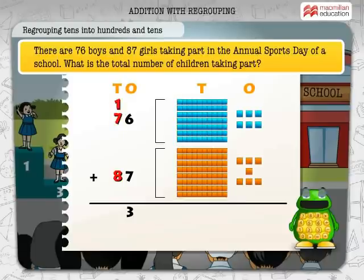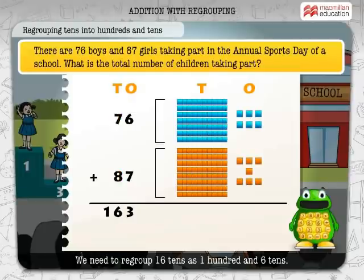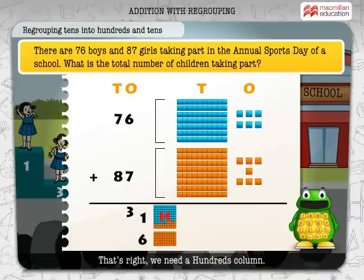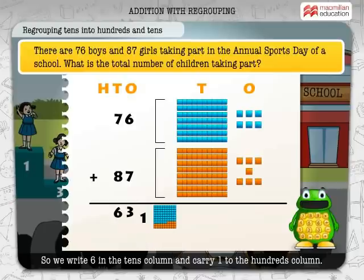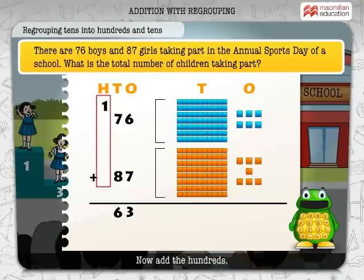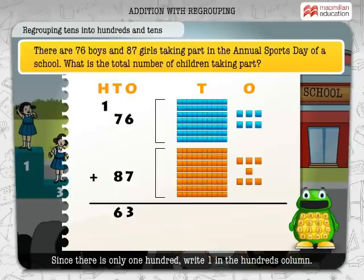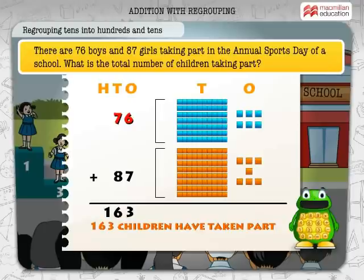Now, add the tens: 1 plus 7 plus 8 is equal to 16. We need to regroup 16 tens as 100 and 6 tens. That's right — we need a hundreds column. So, we write 6 in the tens column and carry 1 to the hundreds column. Now, add the hundreds. Since there is only 1 hundred, we write 1 in the hundreds column. 76 plus 87 is equal to 163.